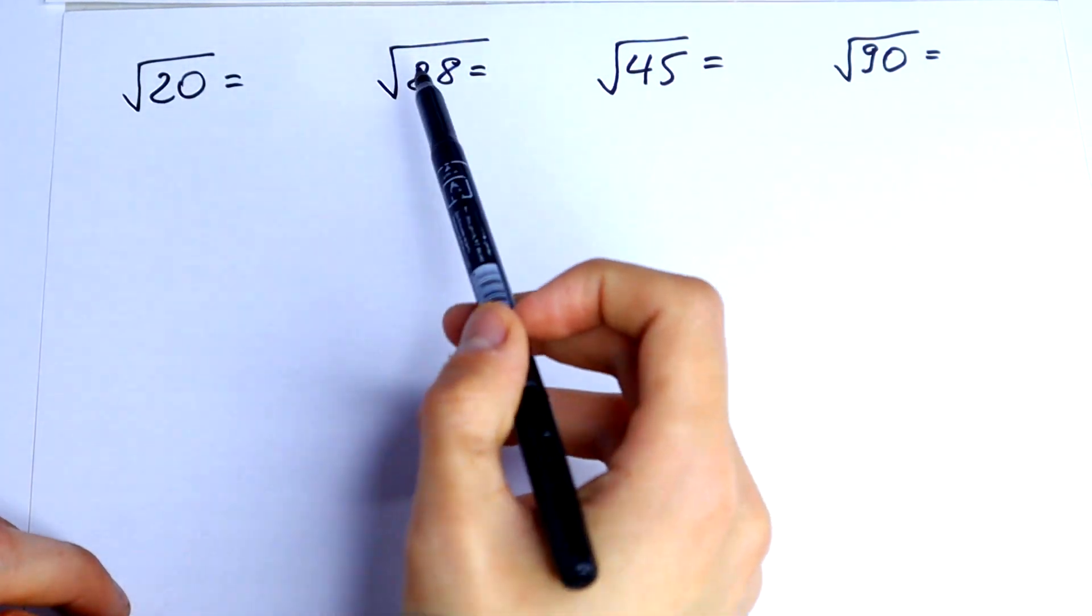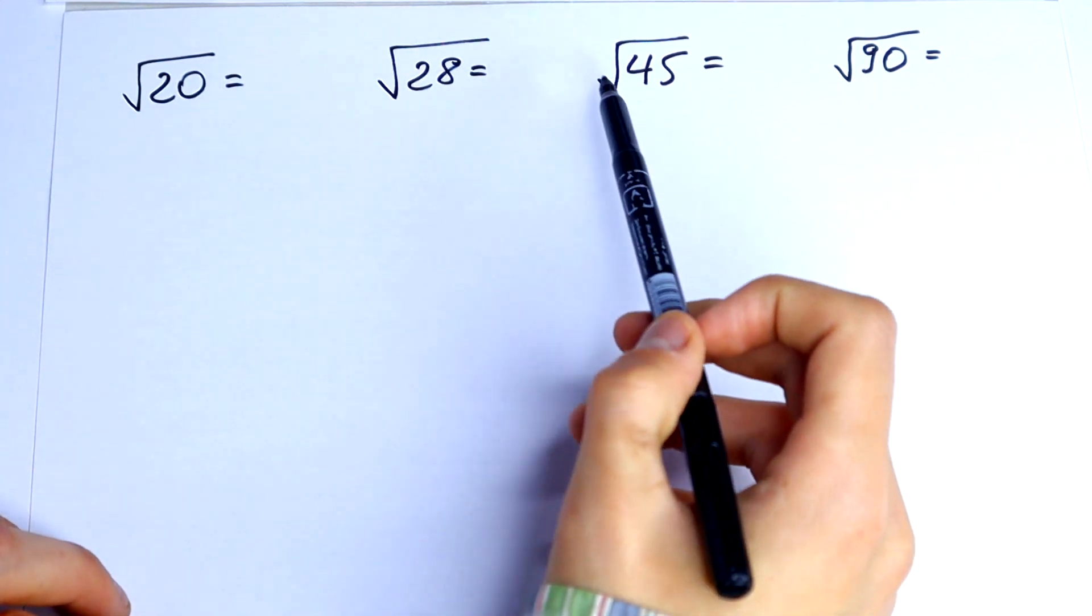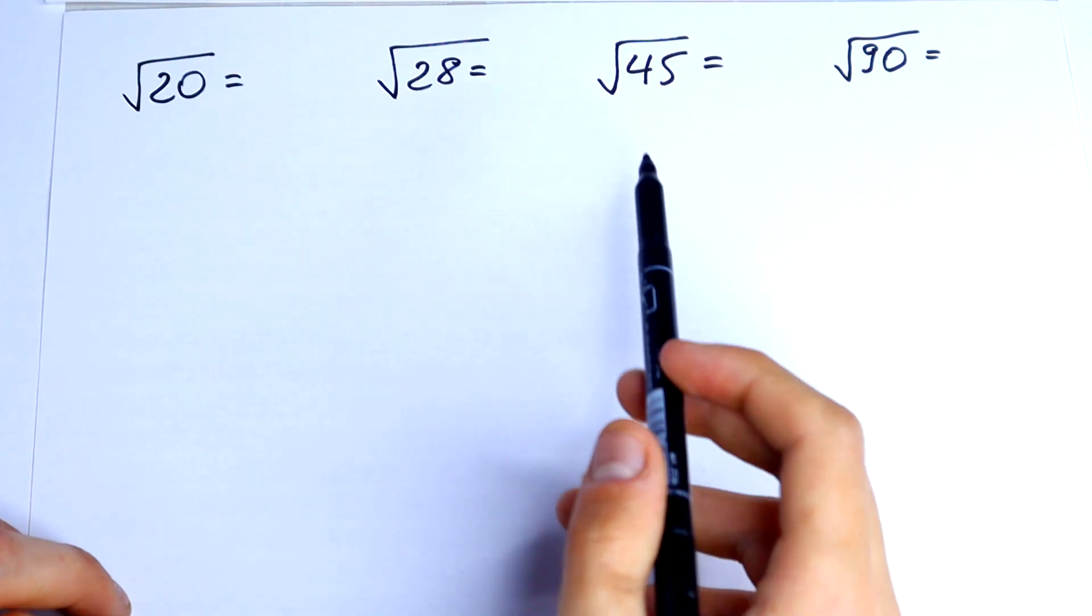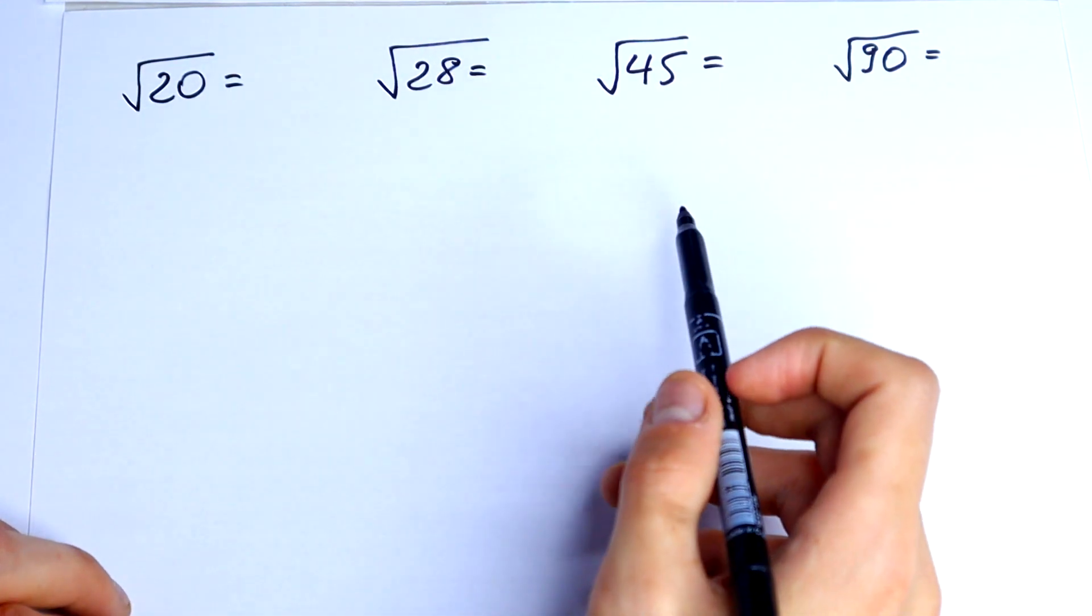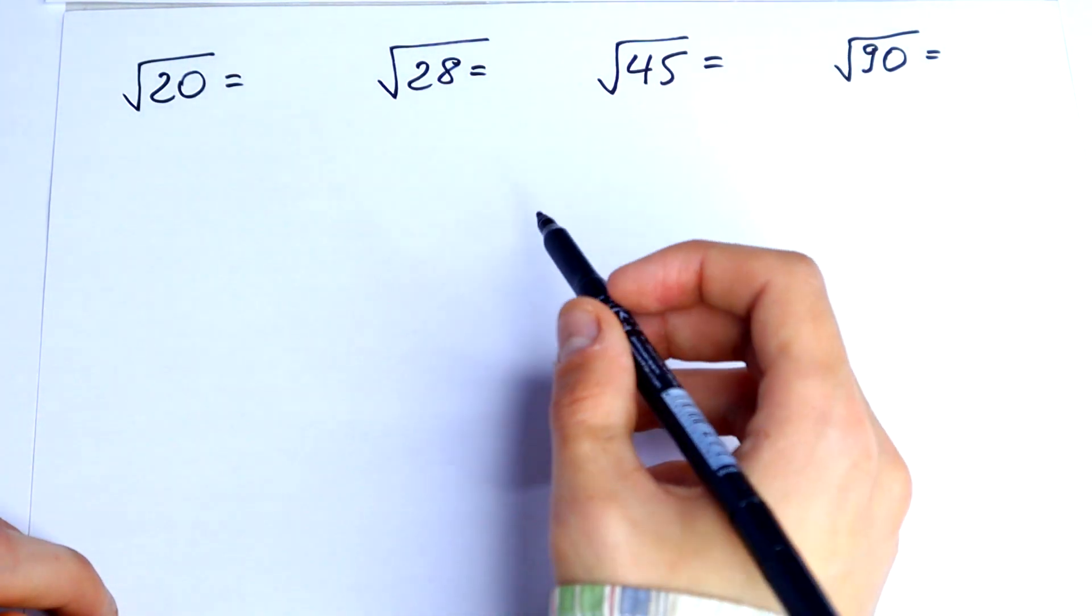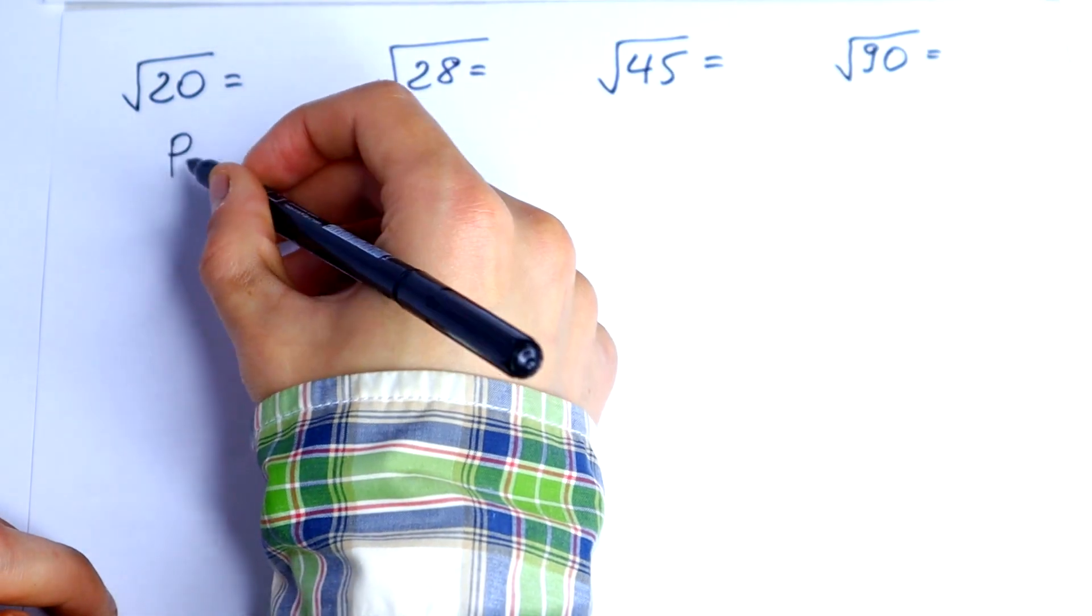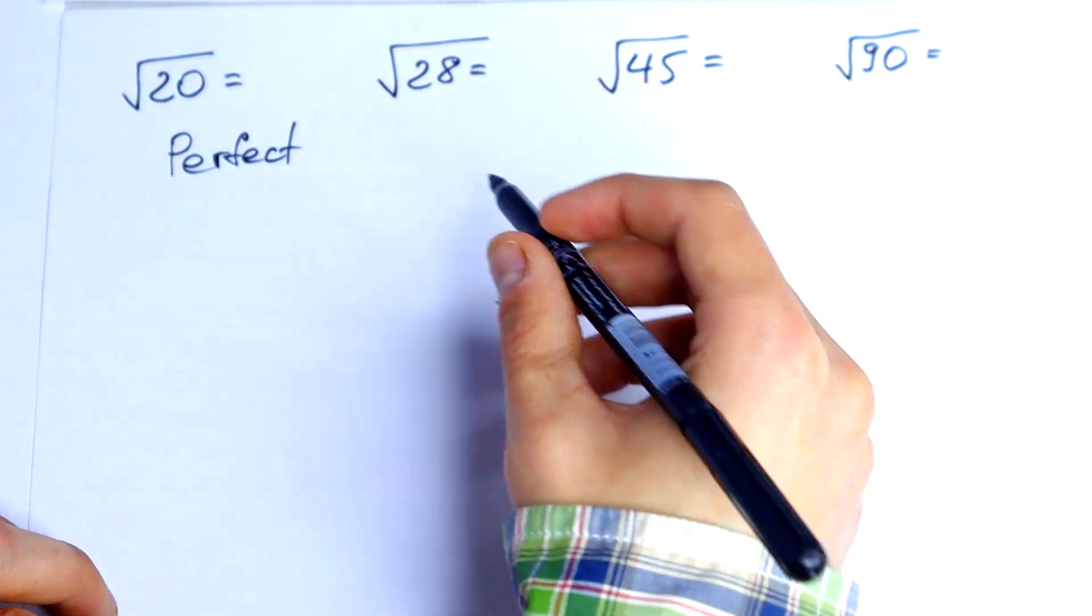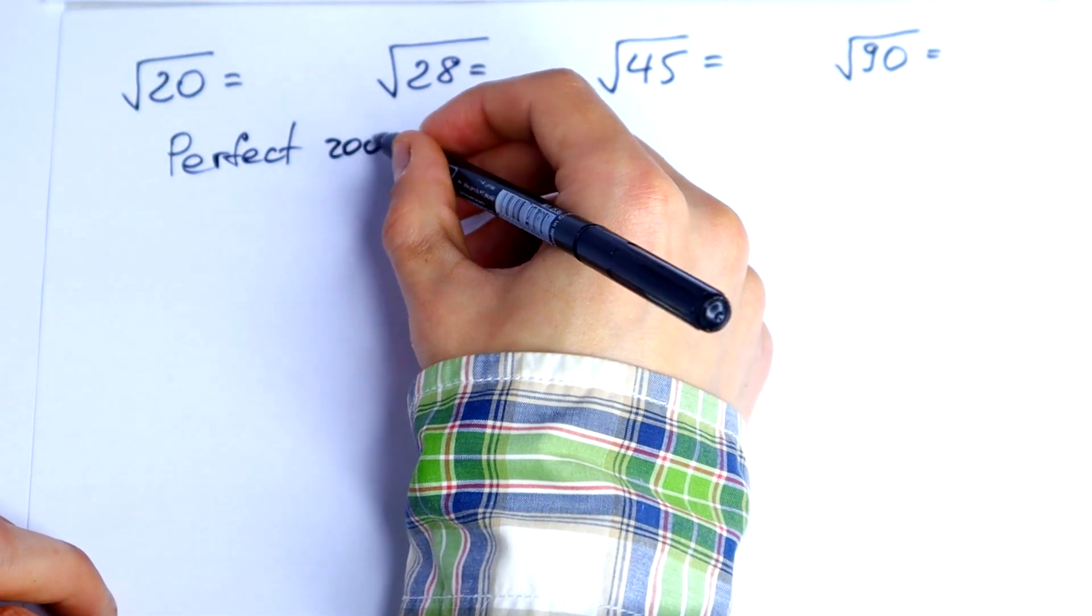Here we have square root of 20, square root of 28, square root of 45, and square root of 90. But before solving this I want to speak with you about perfect roots.